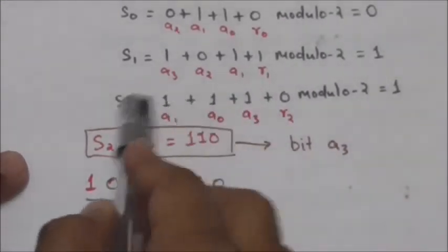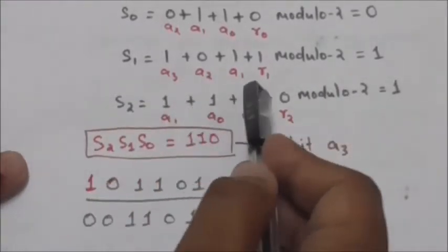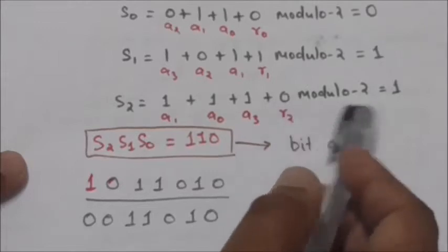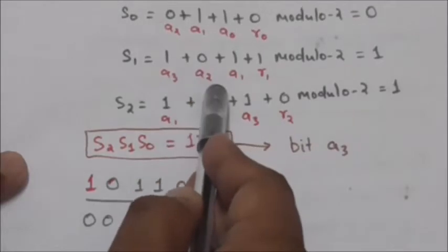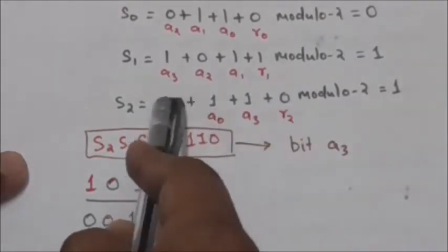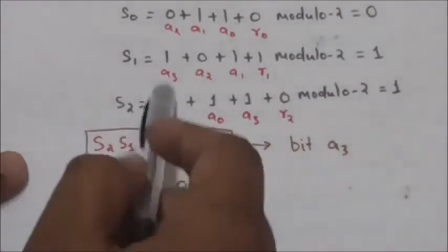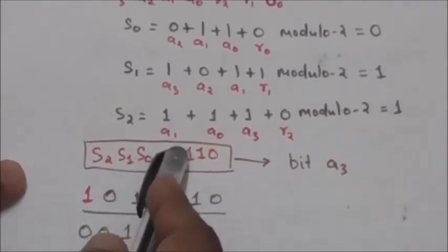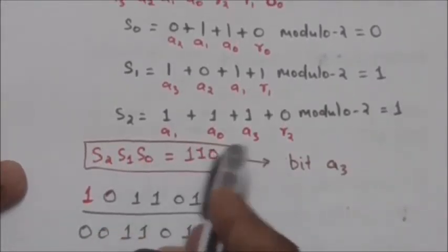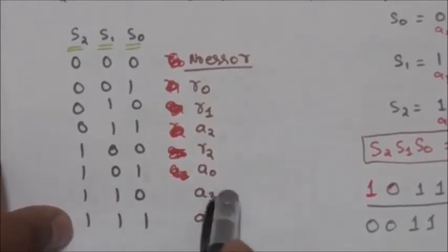For s2, the equation is (a1 + a0 + a3 + r2) modulo 2. With a1=1, a0=1, a3=1, r2=0, the bits 1,1,1,0 have an odd number of ones, so s2 will be 1. Therefore s2, s1, s0 is equal to 1,1,0.